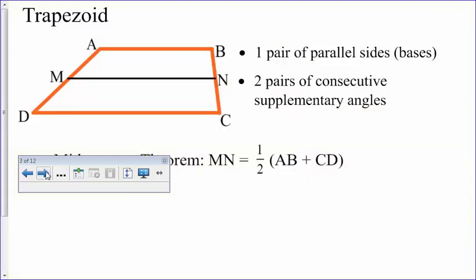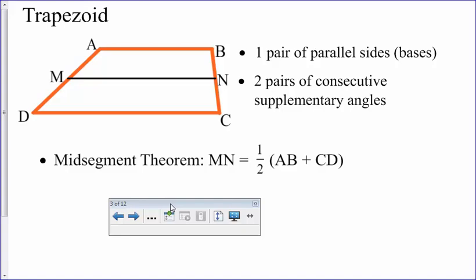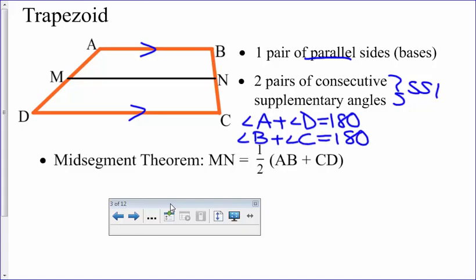Let's go ahead and talk about the trapezoid. It has only two properties. One pair of parallel sides, they're called the bases. So these are parallel, side AB and side DC. Because we have parallel, then we have consecutive or same side interior angles, which we know equal 180. So that means we know that angle A plus angle D equal 180. Plus we know angle B plus angle C equal 180.